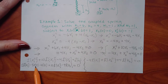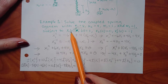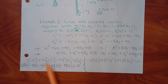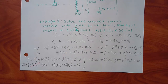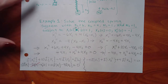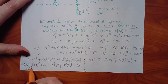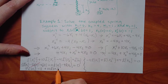What is X1(0)? Looking at our initial conditions, X1(0) is 0 — so that term goes away. What about X1'(0)? X1'(0) is 1. So this becomes: S squared L{X1} minus 1 plus 10 L{X1} minus 4 L{X2} equals 0.